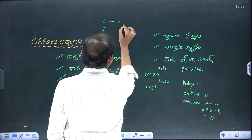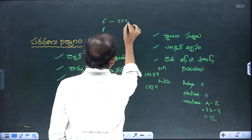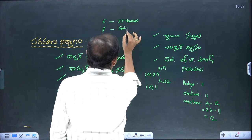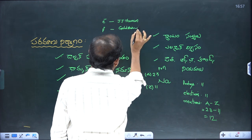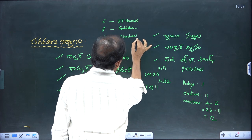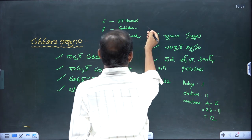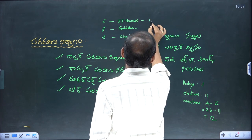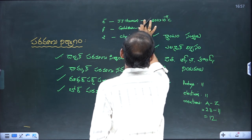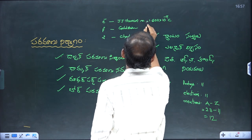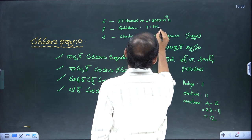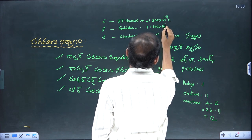The electron was discovered by J.J. Thomson. The proton was discovered by Goldstein. The charge on the electron is minus 1.608 × 10⁻¹⁹ coulombs. The charge on the proton is plus 1.602 × 10⁻¹⁹ coulombs.